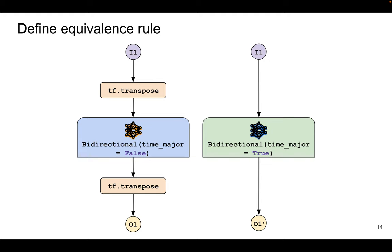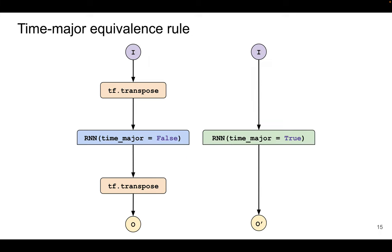Now let's go back to the equivalent graphs. These graphs are concrete. We want to define a generalizable rule based on them so that we can apply the rule to other APIs to generate more equivalent graphs. We notice that any RNN function, such as LSTM or GRU, can replace the bidirectional API in the graphs. Thus, we generalize the bidirectional function to any RNN function that takes time major as a parameter. We obtain an equivalence rule stating that RNNs taking time major tensors should produce identical results to those taking batch major tensors with transpose applied to their inputs and outputs.